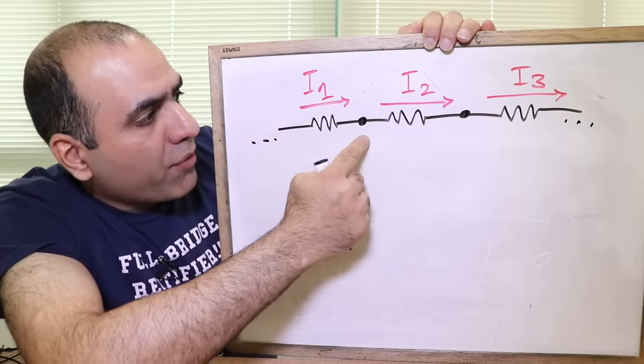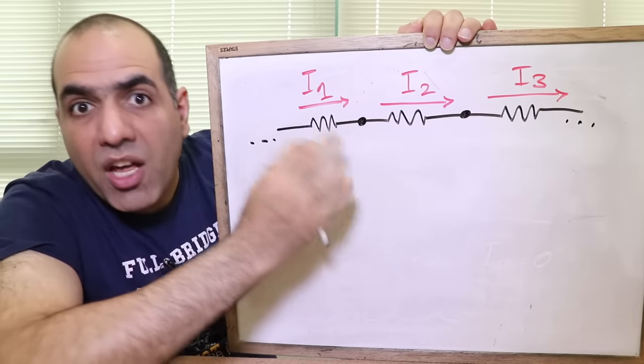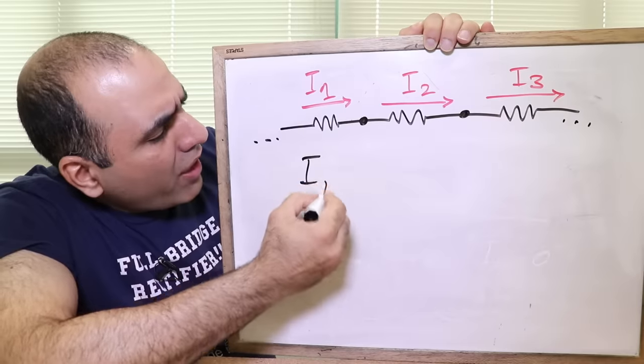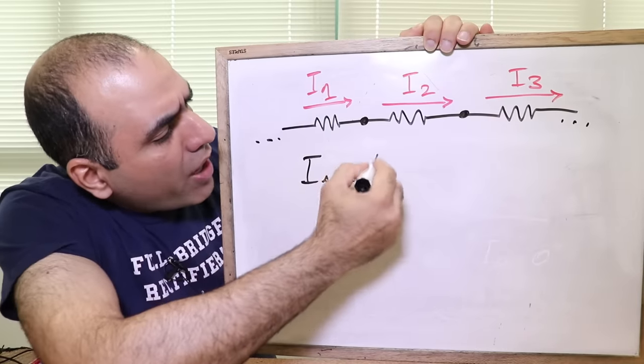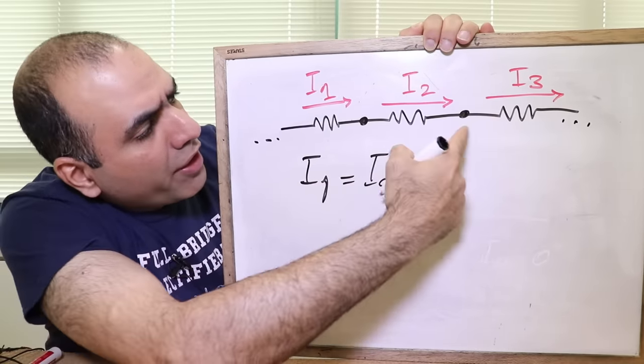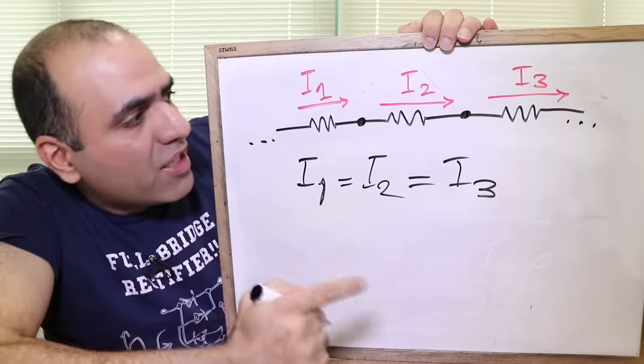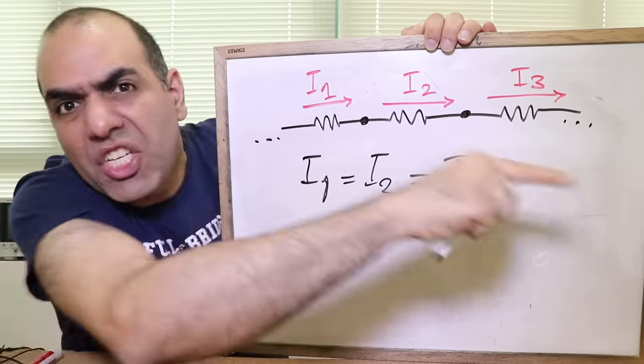So based on KCL, if you have nodes with only two components connecting to it, which means they are in series, I1 going into the node is equal to I2 leaving the node. Or here, the same, I2 going in is equal to I3 leaving. This is fantastic too! This means the current through all series components is always the same. Remember these two.